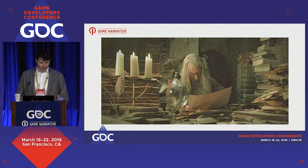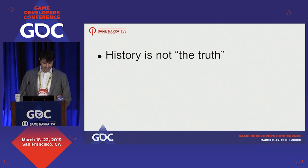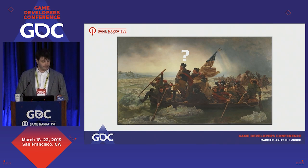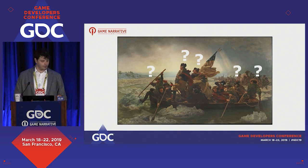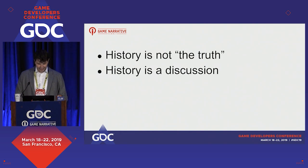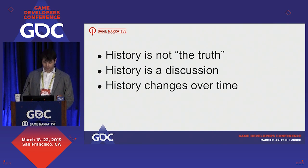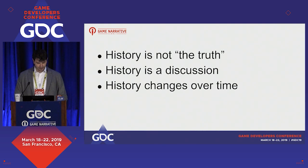This leads us to some key principles about the way history works. The first is that history is not the truth — we are only following traces, and even if we could get inside the mind of a historical witness, this still wouldn't be the truth because other people would have experienced the moment differently. Second, history is a discussion, because every historian who looks at the same pile of garbage is going to draw different conclusions. Finally, history is always changing because each generation of historians will view their evidence differently.